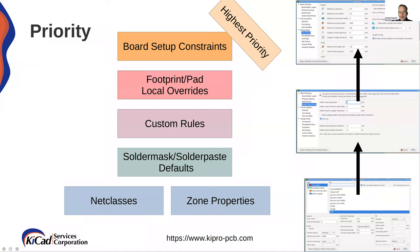Above that are solder mask and solder paste defaults. These are defaults for your board, set in your board setup. Solder mask and solder paste will override anything from net classes. Then after this, we get to the custom rules. This is where you write custom rules, and this is going to override anything below it — solder mask, solder paste, net class, and zone properties — as well as footprint and pad local overrides.